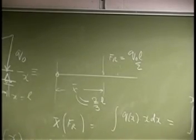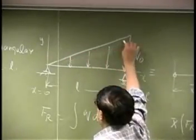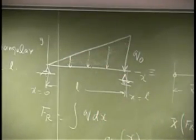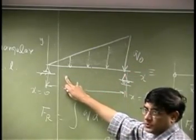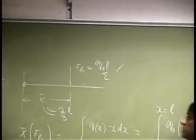If you go back to the original loading, you notice this area, that is a triangle. It is Q0 times L divided by 2. That was the area for the triangle, and that is exactly what you have as the resultant force.